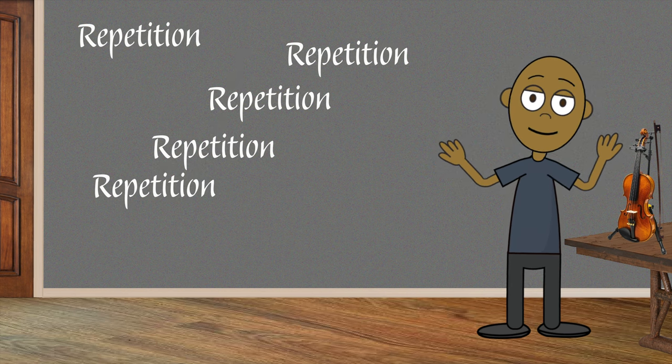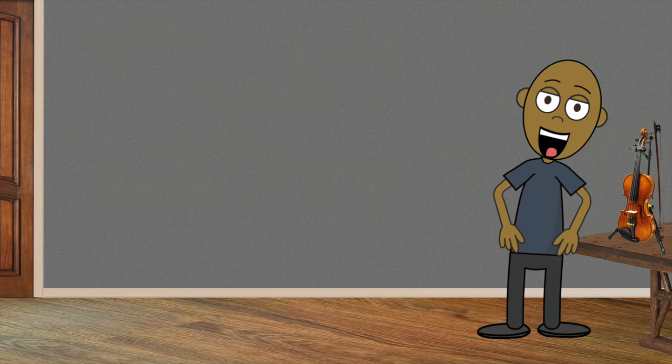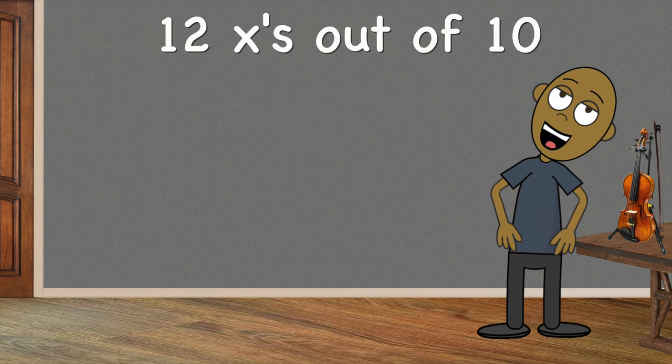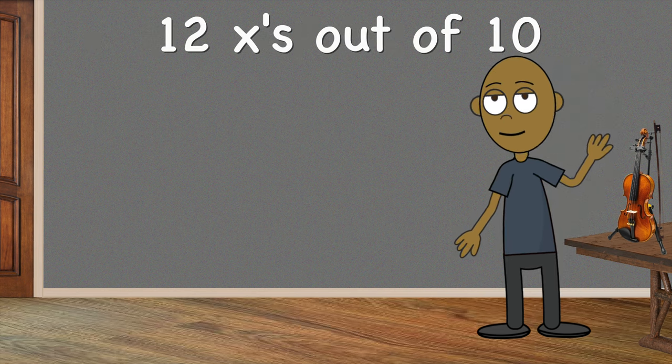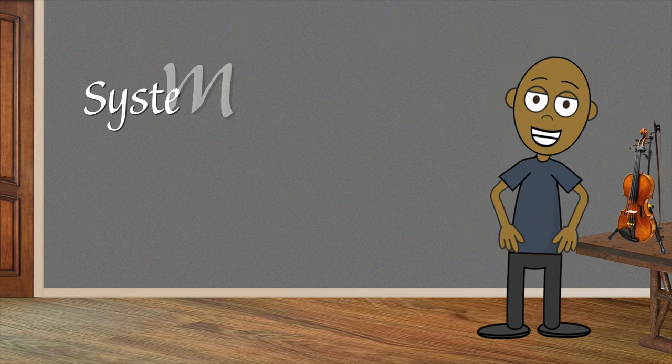To do this, what if you aim for something wild, like playing it perfectly 12 times out of 10? Yeah, I know that's impossible, but stick with me. What this shows is that we need a system to measure where we are compared to where we want to be.